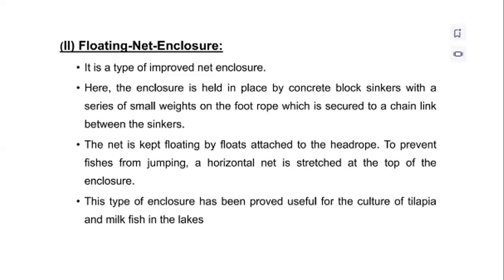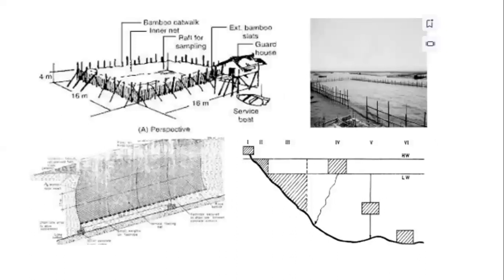The second is the floating net enclosure, which is an improved type of net enclosure. The enclosure is held in place by concrete block sinkers, with a series of small weights on the foot rope secured to a chain link between the sinkers. The net is kept floating by floats attached to the head rope. To prevent fish from jumping out, a horizontal net is stretched at the top of the enclosure. This type of enclosure has proved useful for the culture of tilapia and milk fish in lakes. Here is an example of how a pen is built in an open area.